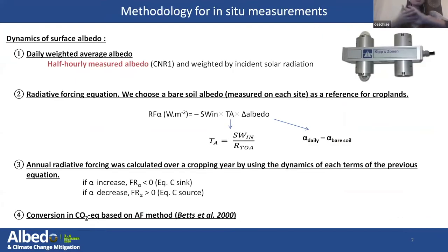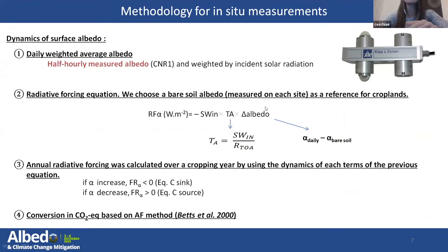At the beginning, I analyzed the causes of fast surface albedo changes on two sites close to Toulouse, Aorade and La Masquerre, and calculated the albedo radiative forcing associated to those variations. We applied this methodology to a few European ICOS sites. To analyze the dynamics of surface albedo, I calculated daily weighted average albedo using half-hourly measured albedo weighted by incident solar radiation. To calculate the radiative forcing, I used a product of three terms: incident solar radiation, atmospheric transmittance, and the difference in albedo between the mean daily value and the bare soil albedo. The annual radiative forcing was calculated over a whole cropping year. If the albedo radiative forcing was negative, it was equivalent to a carbon sink; if positive, a carbon source. A conversion to CO2 equivalent was done based on the GWP method.